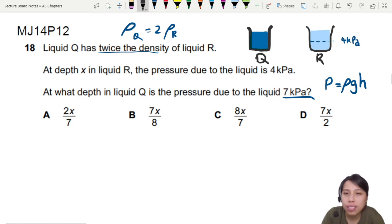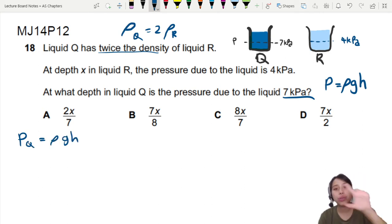So at a certain height, who knows what that height is. I have a pressure of 7kPa. I don't know what that is. But never mind, we write first. So pressure at Q equals to rho GH. And all this is for Q. Why is the H here? Don't really know. Never mind. We write first.